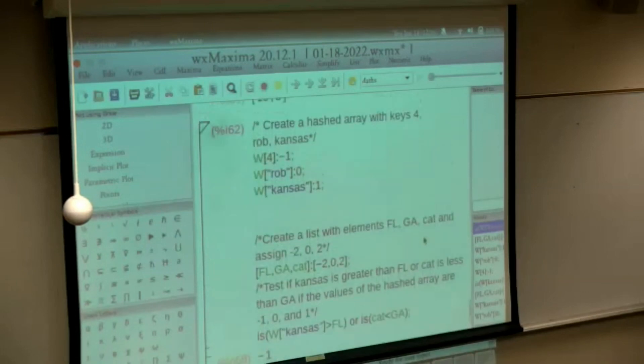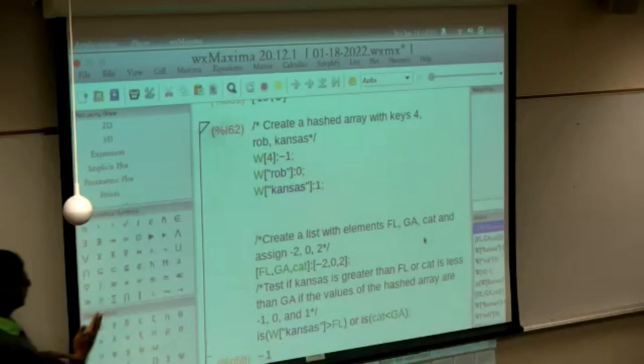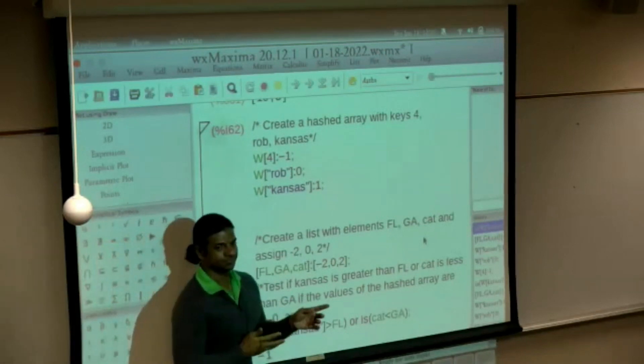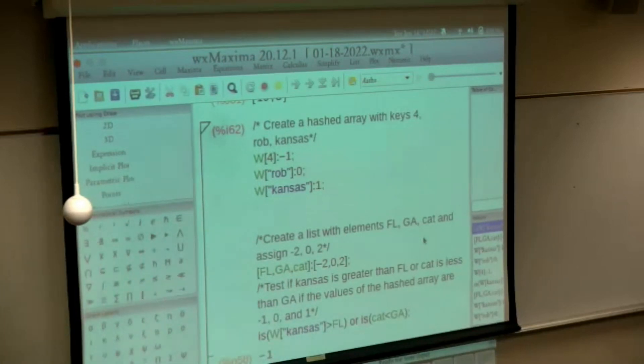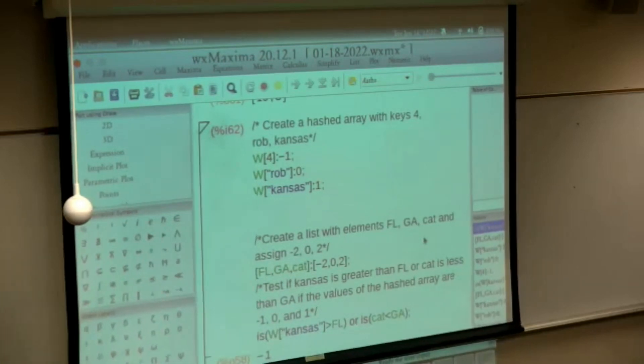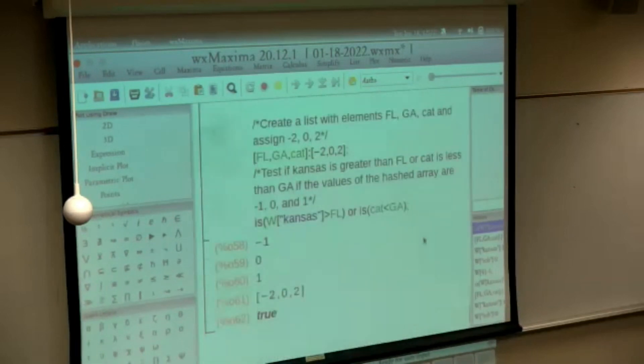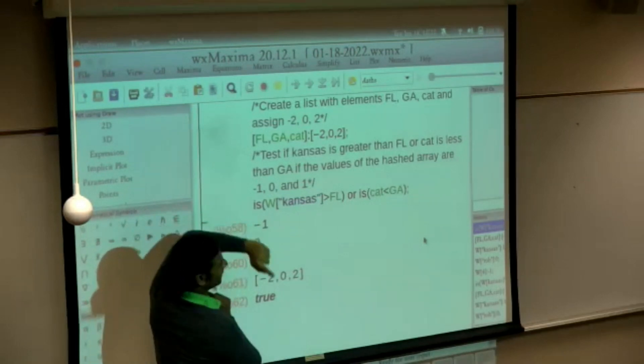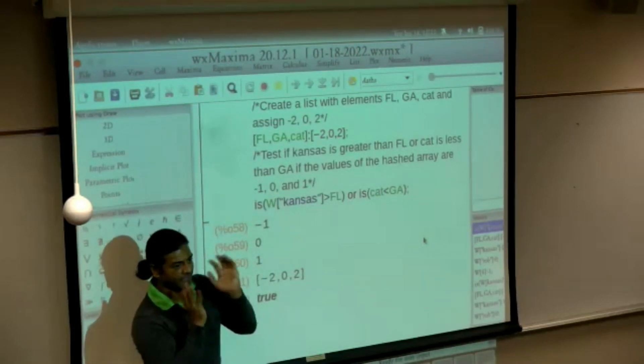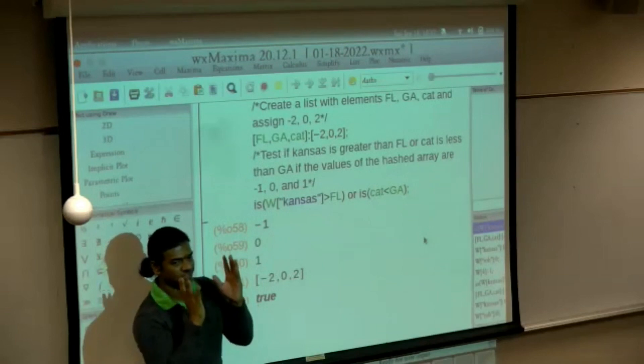So if I don't want to execute each and every line, what would I do? If I don't want to see the outputs, I want to suppress the outputs. Minus one, zero. Do you follow my question? If I don't want each of these outputs displayed, I just want them to execute but not display, so what should I do?